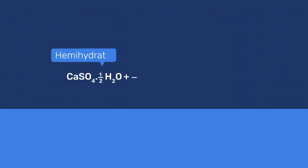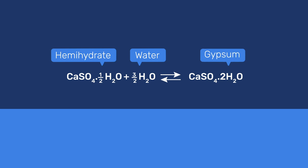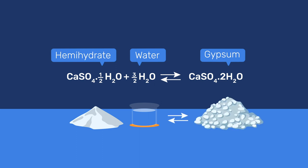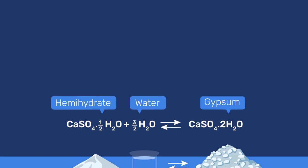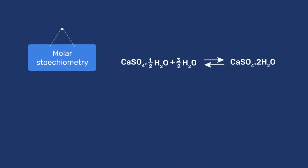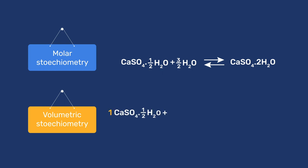Combining both reactions, the global conversion of hemihydrate to gypsum becomes hemihydrate plus three and a half moles water gives gypsum. At ambient temperature, this reaction remains both exothermic and spontaneous. This reaction can conveniently be rewritten using volumetric stoichiometric coefficients, showing that one volume of gypsum and half a volume of water give 1.4 volumes of gypsum. This increases the volume of solids and, as for other mineral binders, explains the setting and hardening.